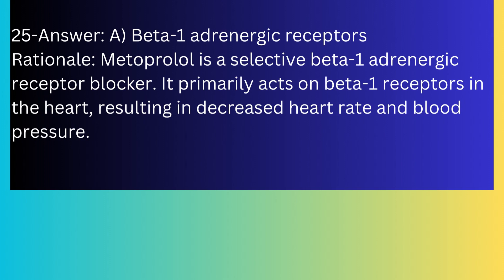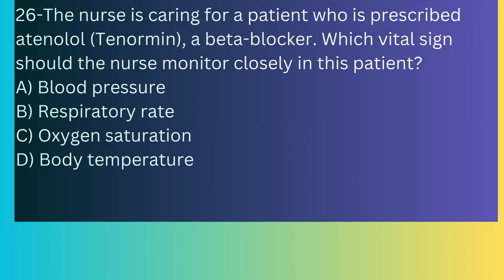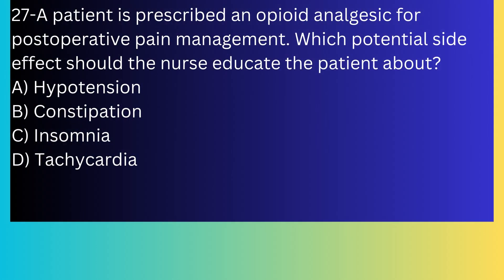Metoprolol results in decreased heart rate and blood pressure. Question number twenty-six: The nurse is caring for a patient who is prescribed atenolol (Tenormin), a beta-blocker. Which vital sign should the nurse monitor closely? A) Blood pressure, B) Respiratory rate, C) Oxygen saturation, D) Body temperature. The answer is A, blood pressure. Beta-blockers such as atenolol primarily affect blood pressure and heart rate; the nurse should closely monitor blood pressure to assess the medication's effectiveness.